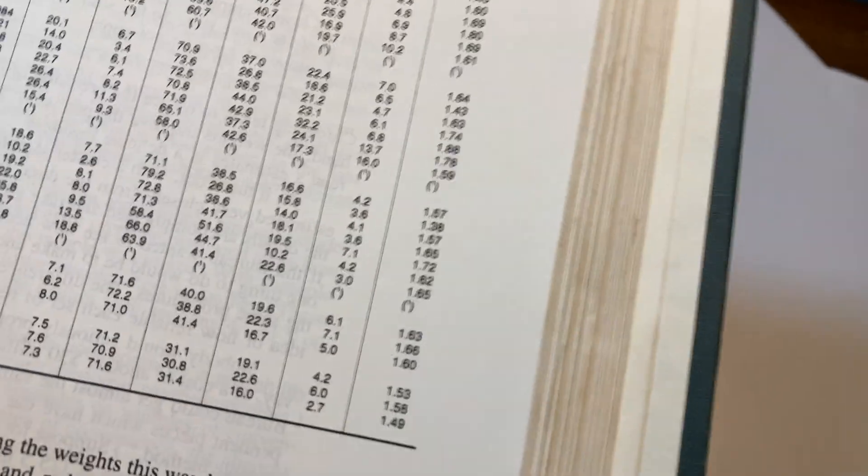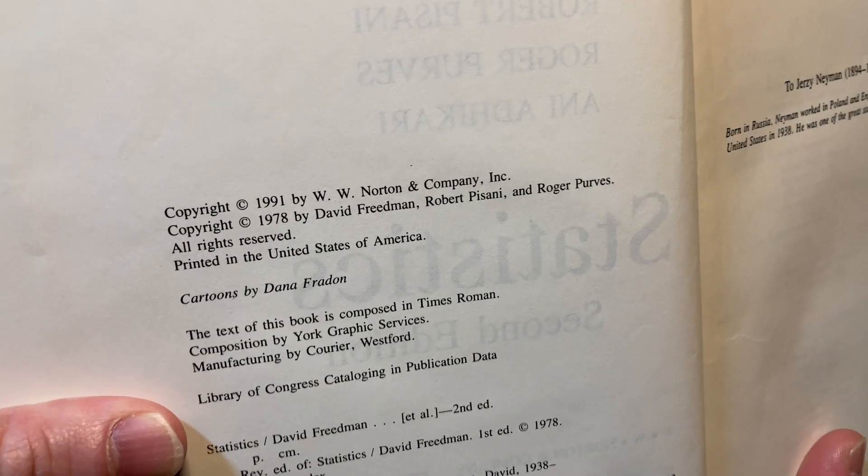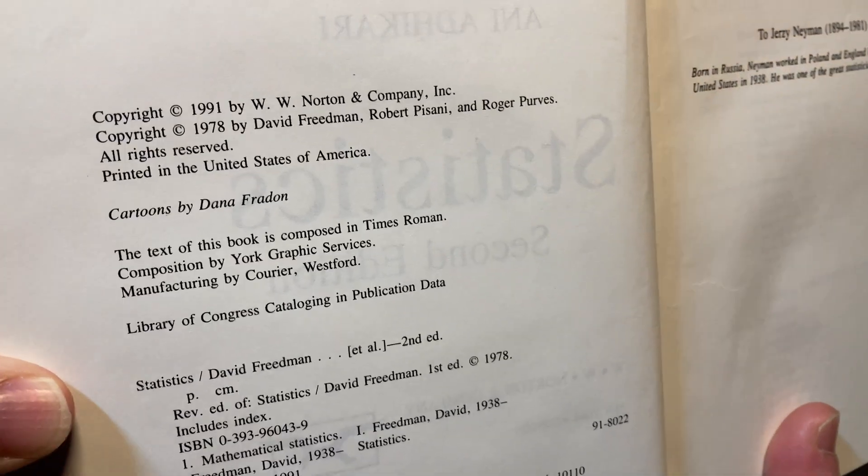And this is an older book. It's heavy, a really heavy book. I'm going to give it a whiff. Mmm, smells musty. It's got a musty smell. It's a little bit musty. And it's older. Copyright 91 and 78. Wow, 78 was the first edition.